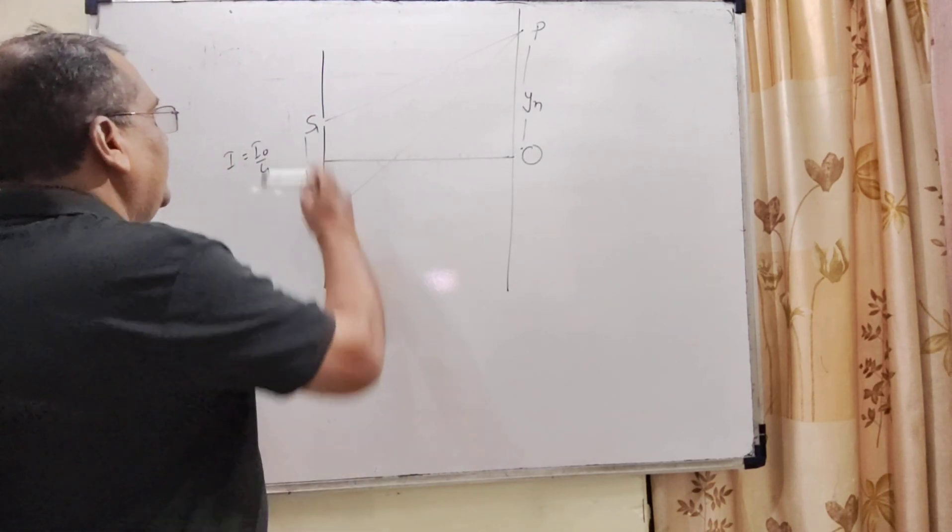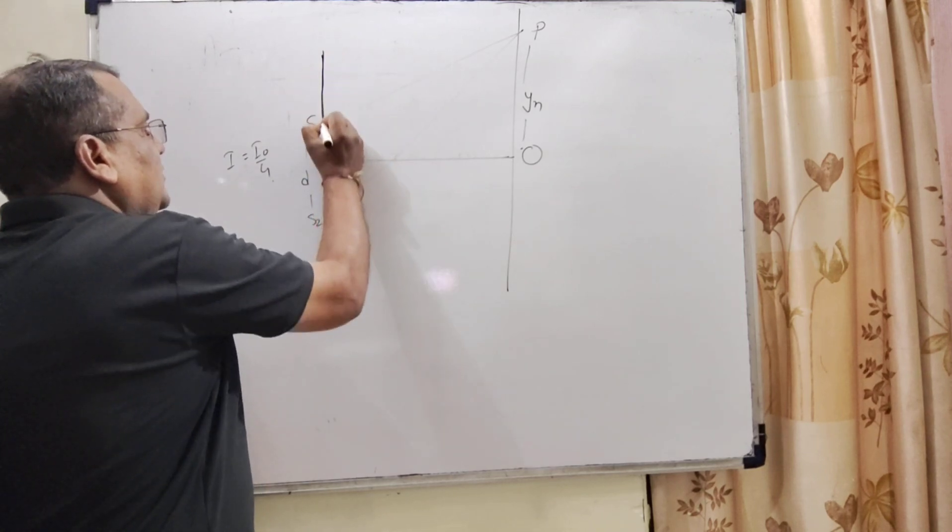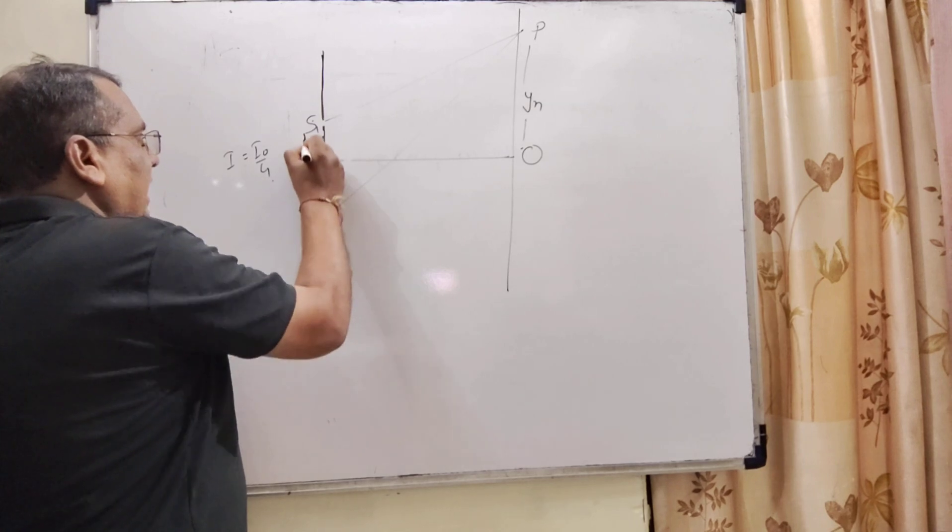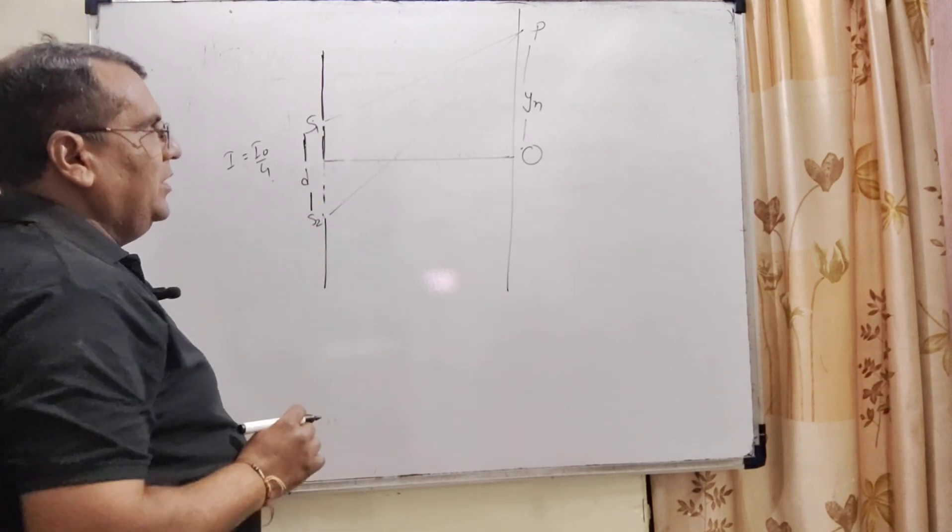And here the diagram is given. Here is the slit S1 and here is S2, and the distance between the slits S1 and S2, that is d.